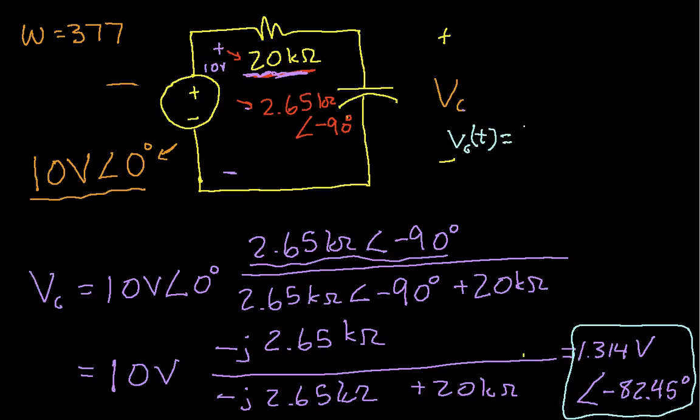Well, it's going to be 1.314 volts times the cosine of 377t, this is omega, which I found out way over here, minus 82.45 degrees. So that basically gives us our answer.